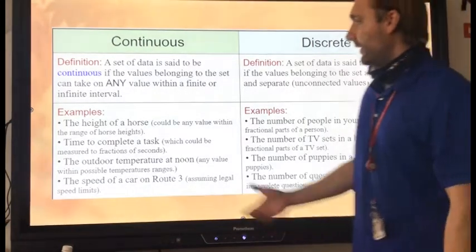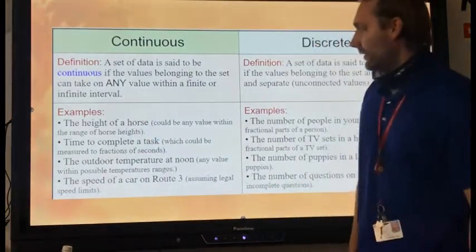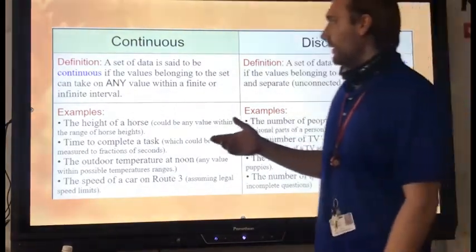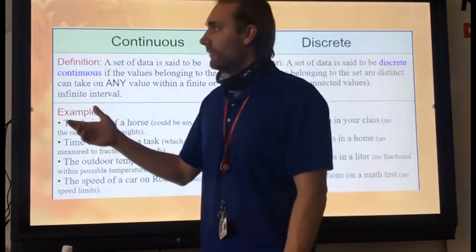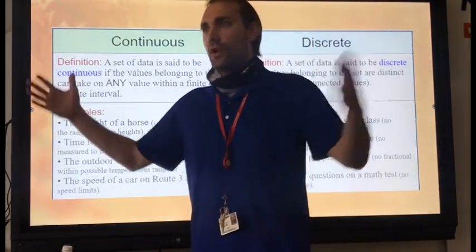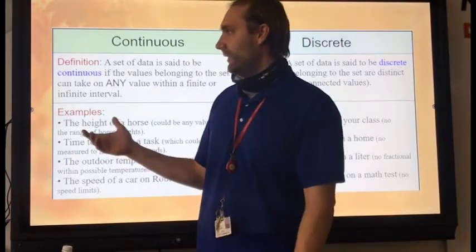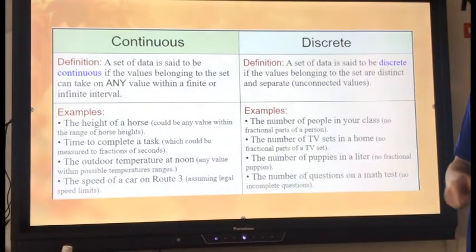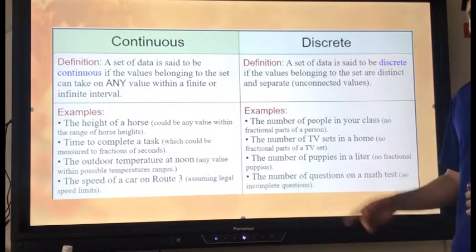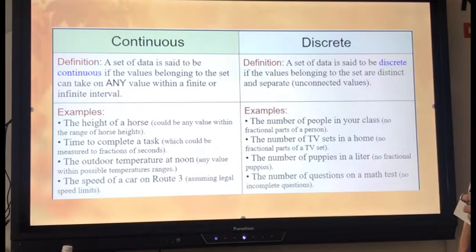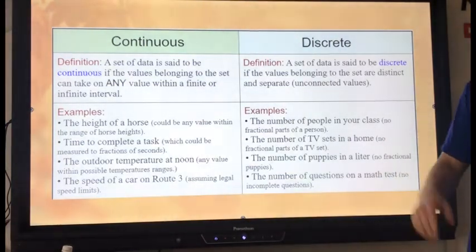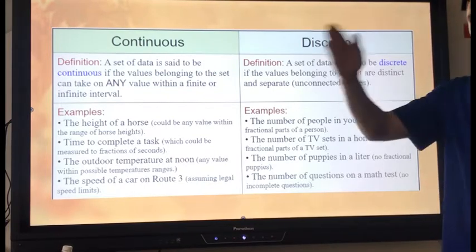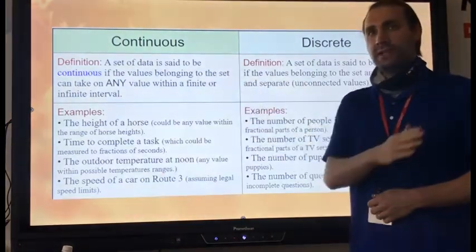Examples for continuous: height of a horse. It could be any value, any range. Like your height. You could be 60 inches, 61 inches, 62 inches. There's a whole range of inches you can be. You can see me 61.5. Time to play a test. Seconds. Just keeps on ticking. You can't jump from five seconds to seven seconds all of a sudden. Outdoor temperature. Temperature doesn't go from 60 degrees all of a sudden out of nowhere 90 degrees. There's a continuous path, right? You've got to go through the numbers to get up there.